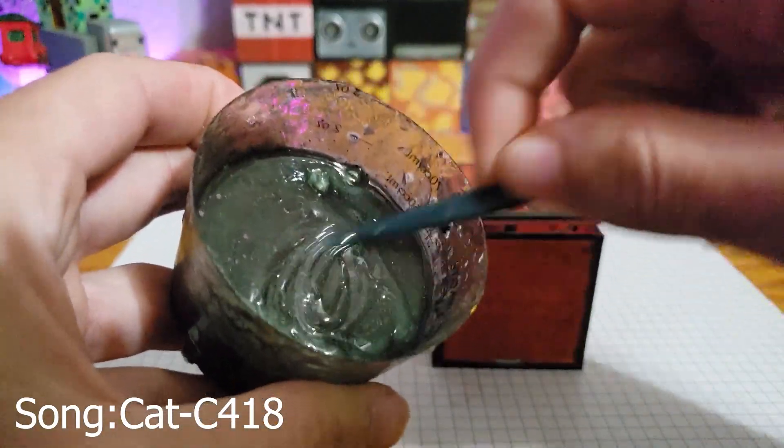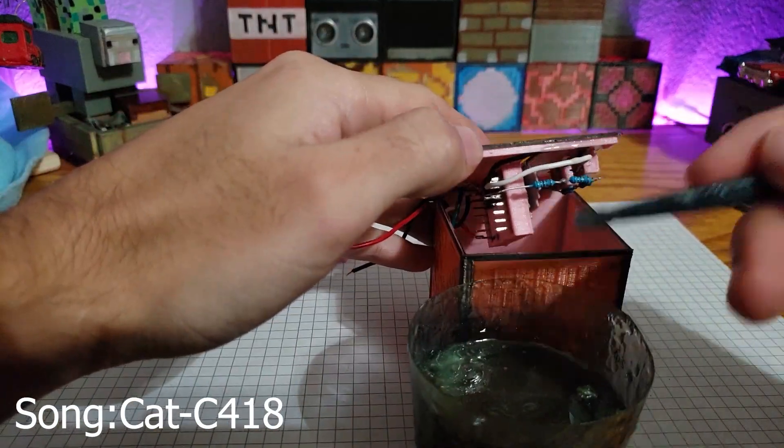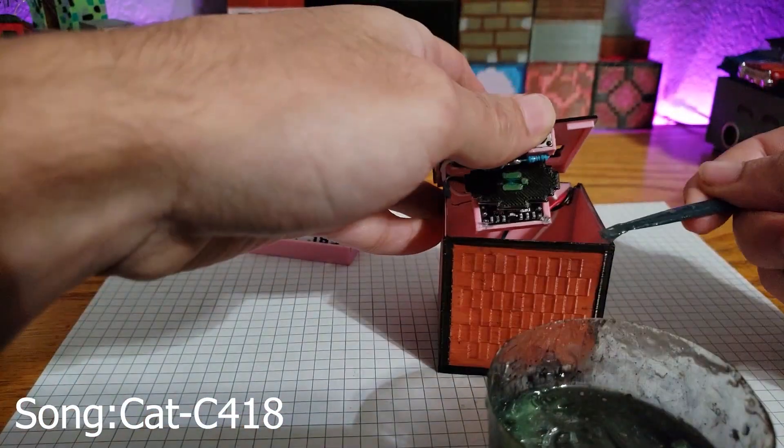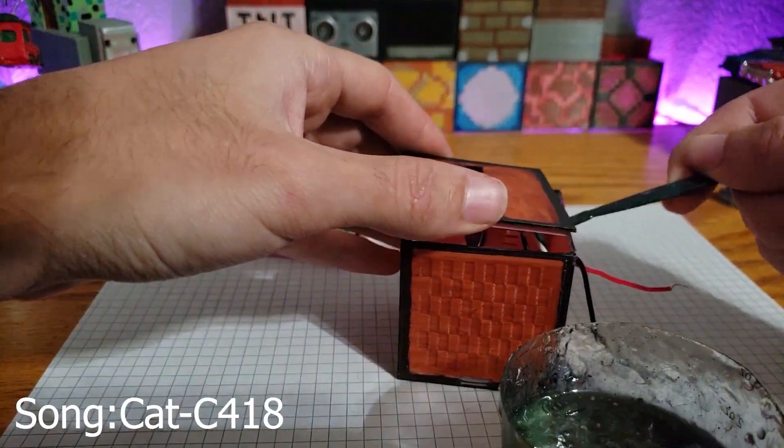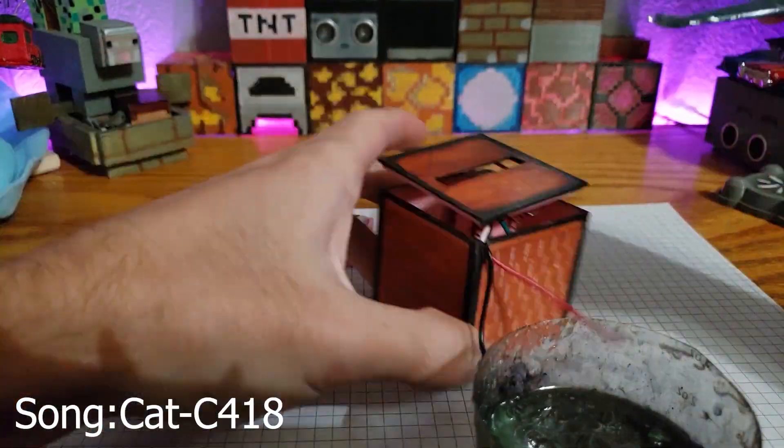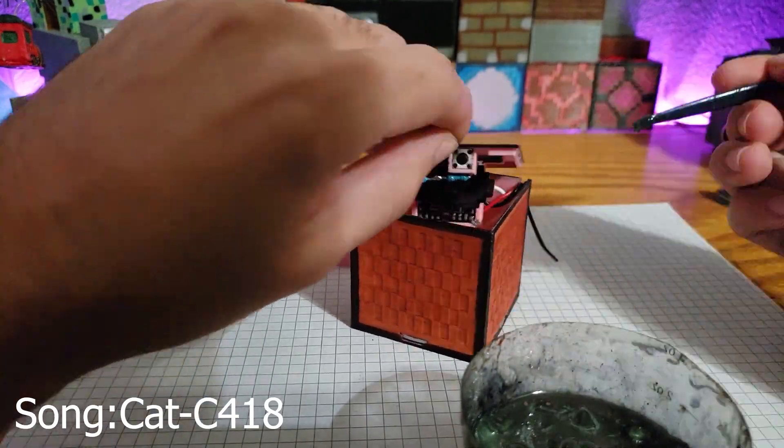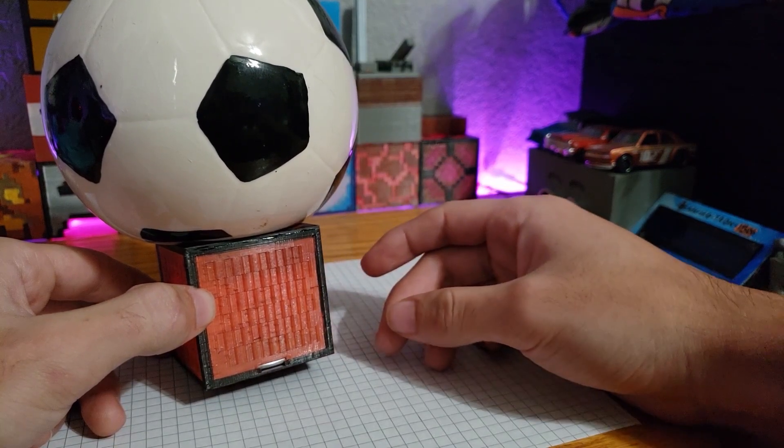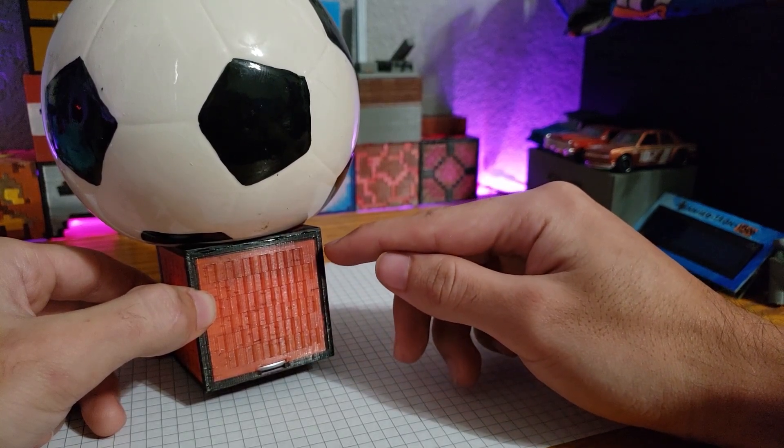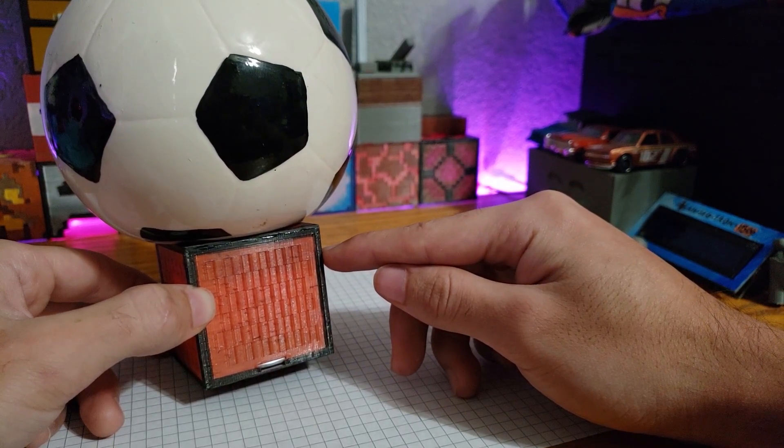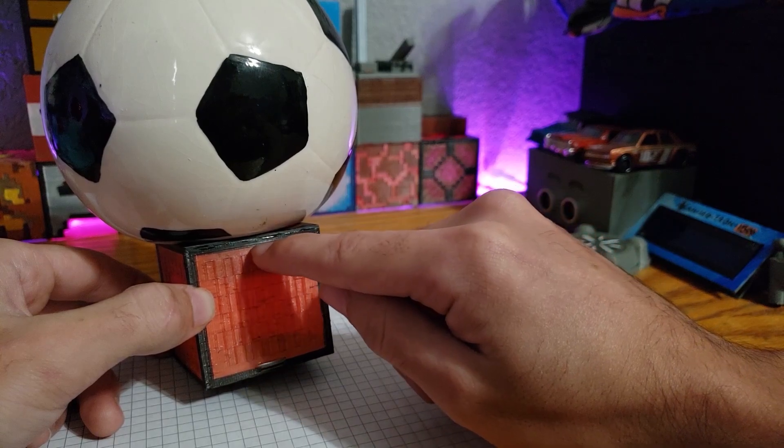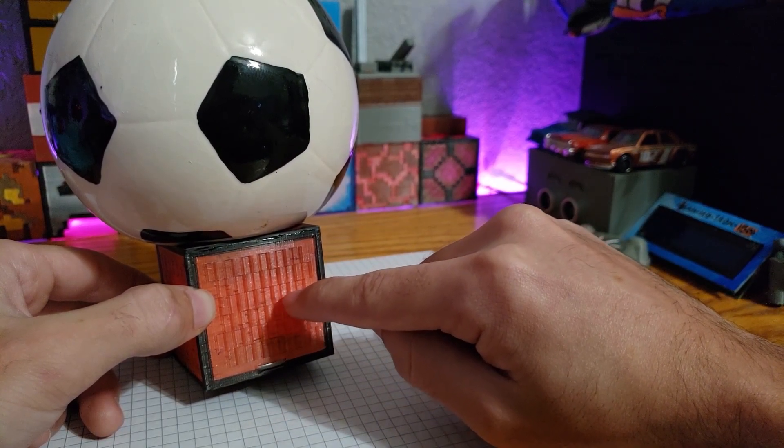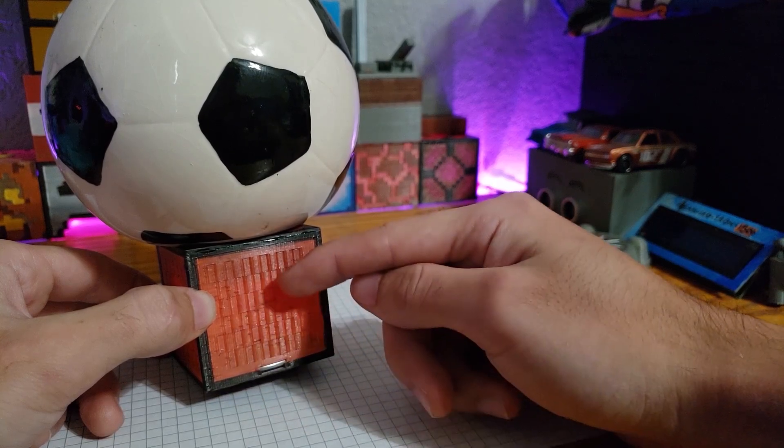So here I am mixing some resin in order to pour into the gaps and close everything up. So it seems that the rattling comes from up here and not actually in these layers. Since these indents connect both of the sides together.